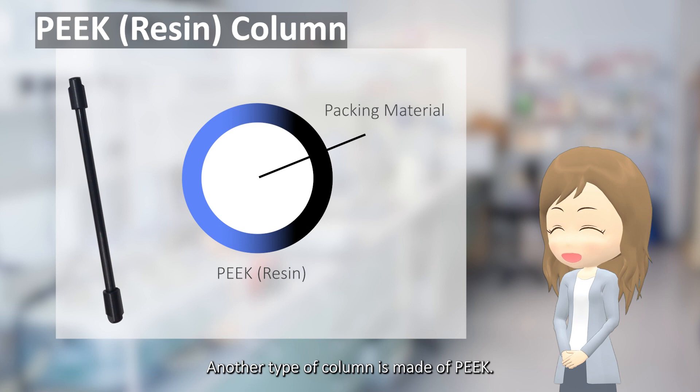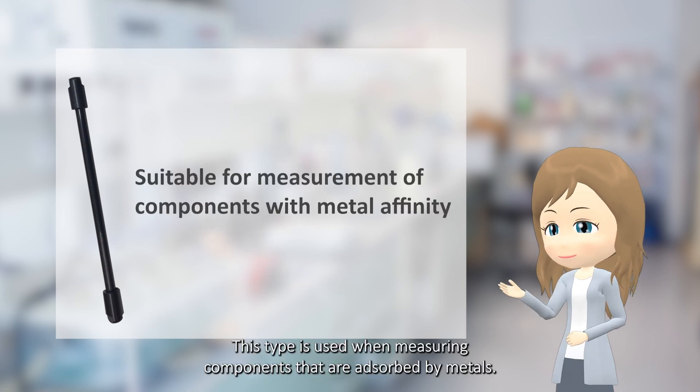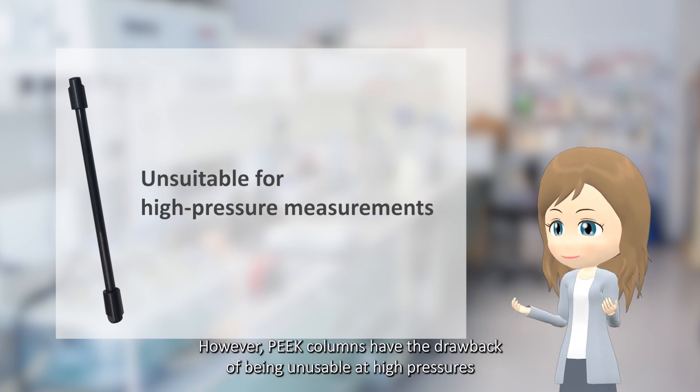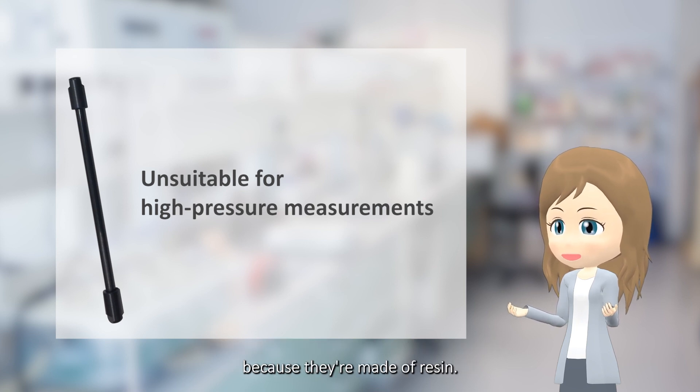Another type of column is made of PEEK. This type is used when measuring components that are adsorbed by metals. However, PEEK columns have the drawback of being unusable at high pressures because they're made of resin.